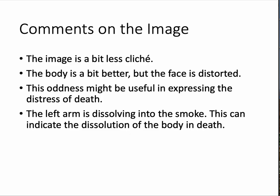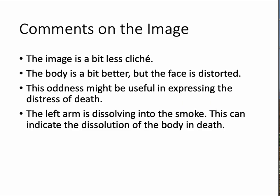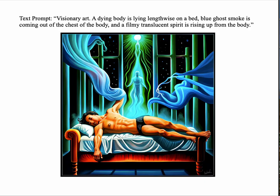Looking at another image — it's a bit less cliché. The body's a little better. The face is distorted again, but the oddness could be useful. One interesting thing is the left arm is kind of dissolving into the smoke, which maybe suggests distress or the dissolution of the body in death — that's a feature of the image that could be used. Another iteration of the same prompt gives us more clarity: a spirit-like looking figure in green behind the body. The left arm is again kind of disappearing into the smoke, maybe dissolving. This body looks a little more agonized or in distress. We've got a spirit and what looks like the moon or something in the background.